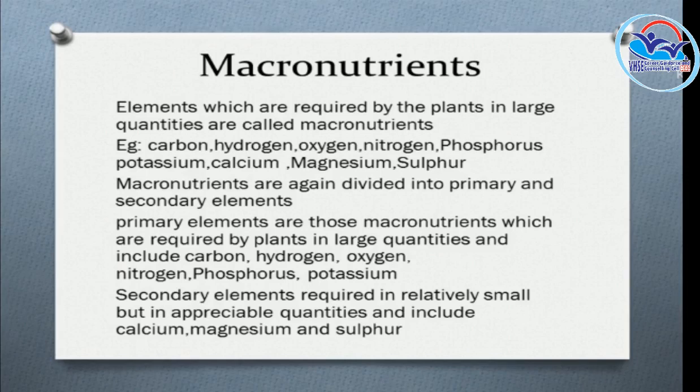Macronutrients are again divided into primary and secondary elements. Primary elements are carbon, hydrogen, oxygen, nitrogen, and phosphorus. Secondary elements are calcium, magnesium, and sulfur.